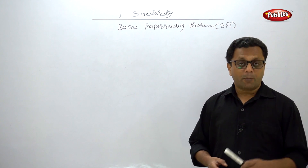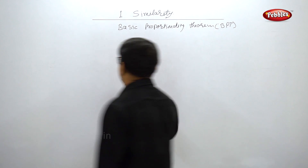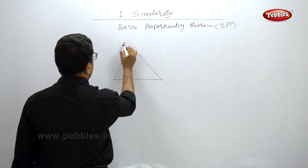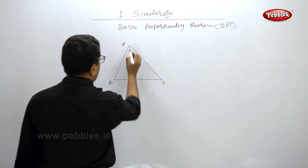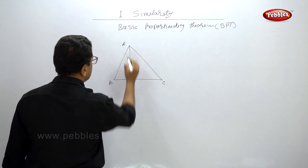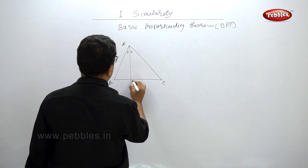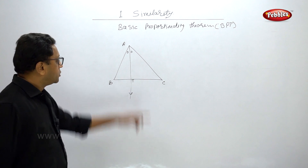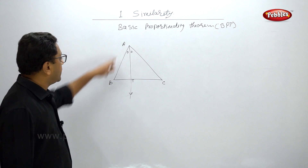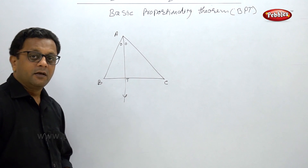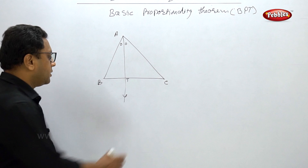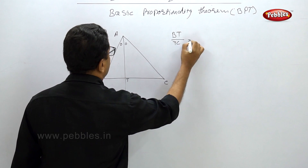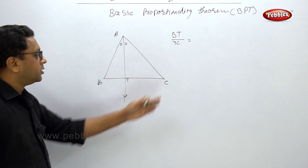One more application we are going to see — that is the property of an angle bisector of a triangle. Suppose we have triangle ABC and suppose this is an angle bisector. Let it intersect BC at point T. Suppose this line is the angle bisector of angle A. Then the property of the angle bisector says that BT upon TC is equal to AB upon AC.